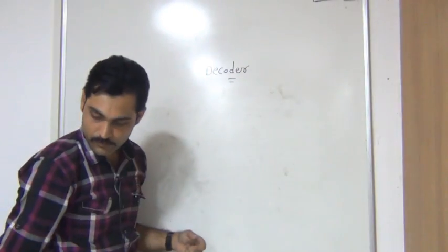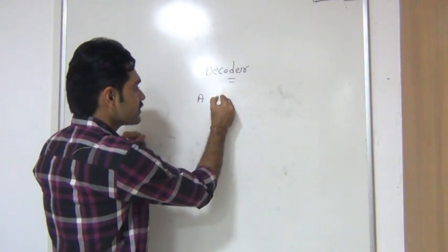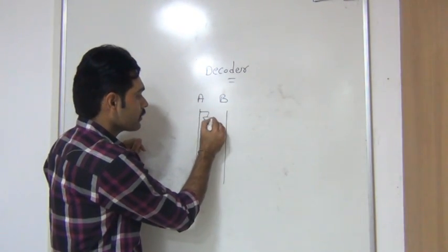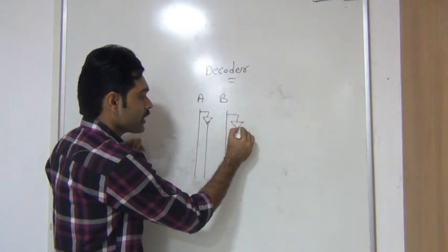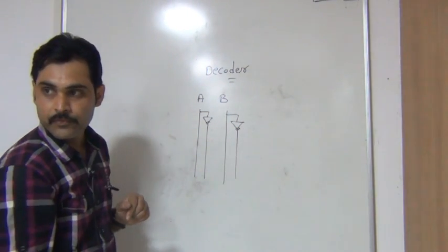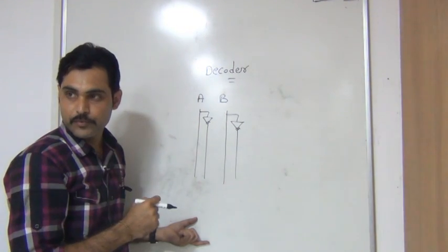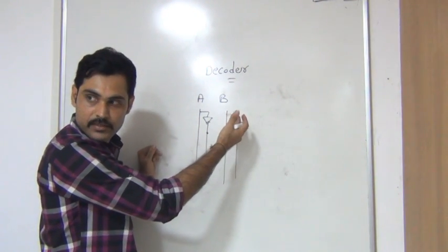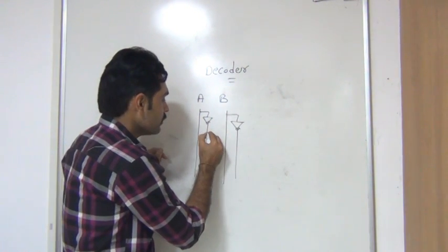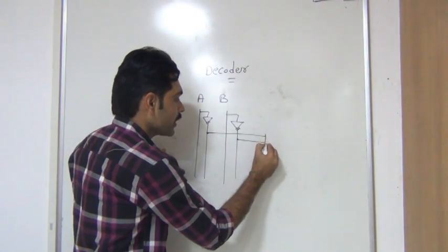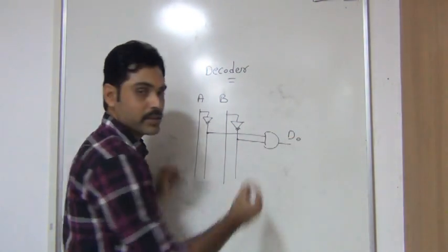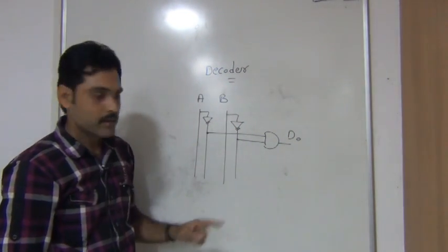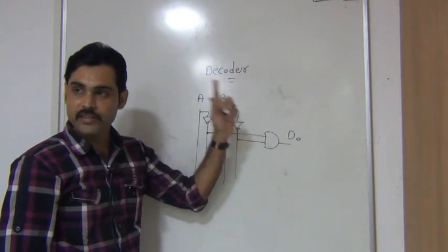To construct this, I am using 2 inputs A and B. Since A and B values are always changing, I am taking NOT gates to get A-bar and B-bar also. According to the table, if 00 is the input, output should be D0. So I will take A-bar and B-bar connected to an AND gate, and this output I am calling D0. Whenever you apply 00 here, these two NOT gates will produce 11, and 1 AND 1 gives output 1, so D0 is 1.